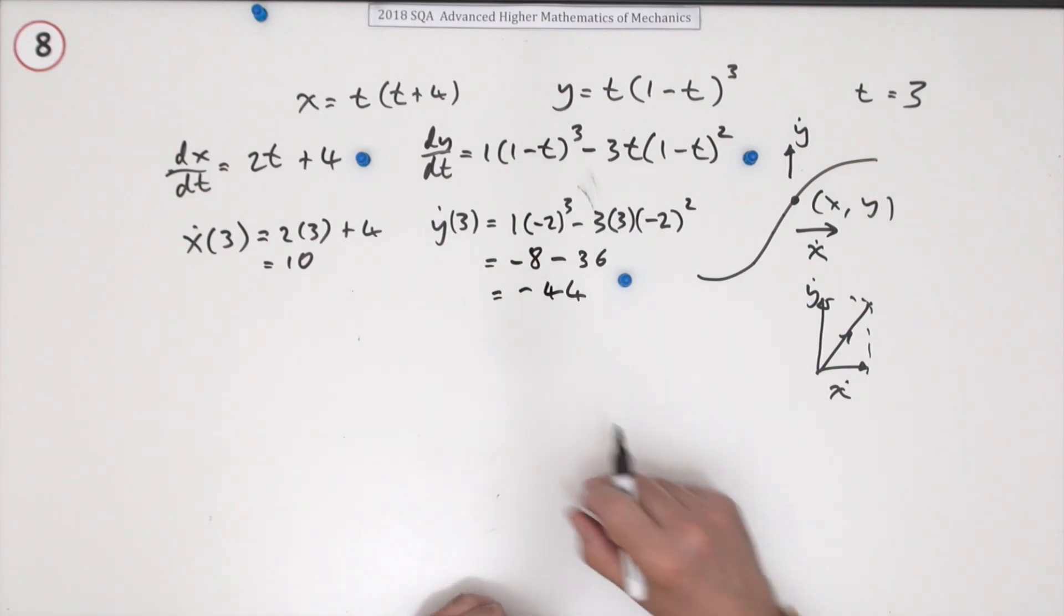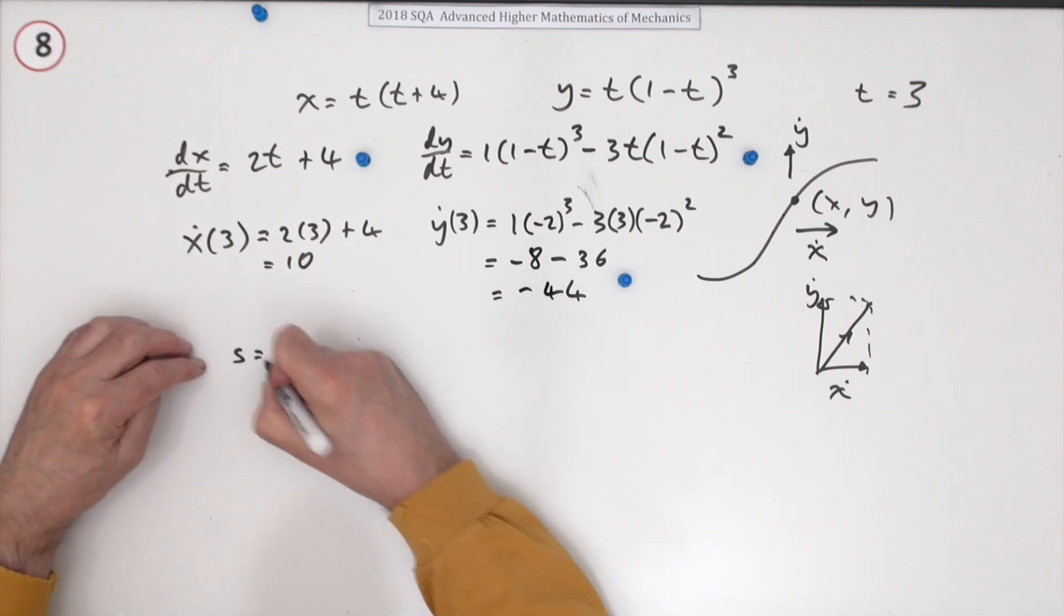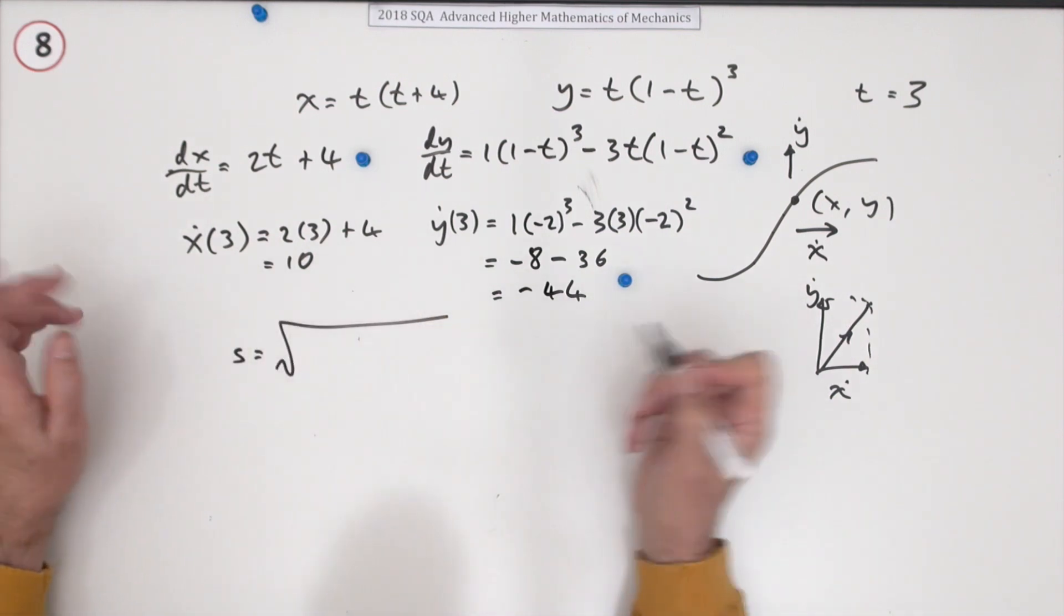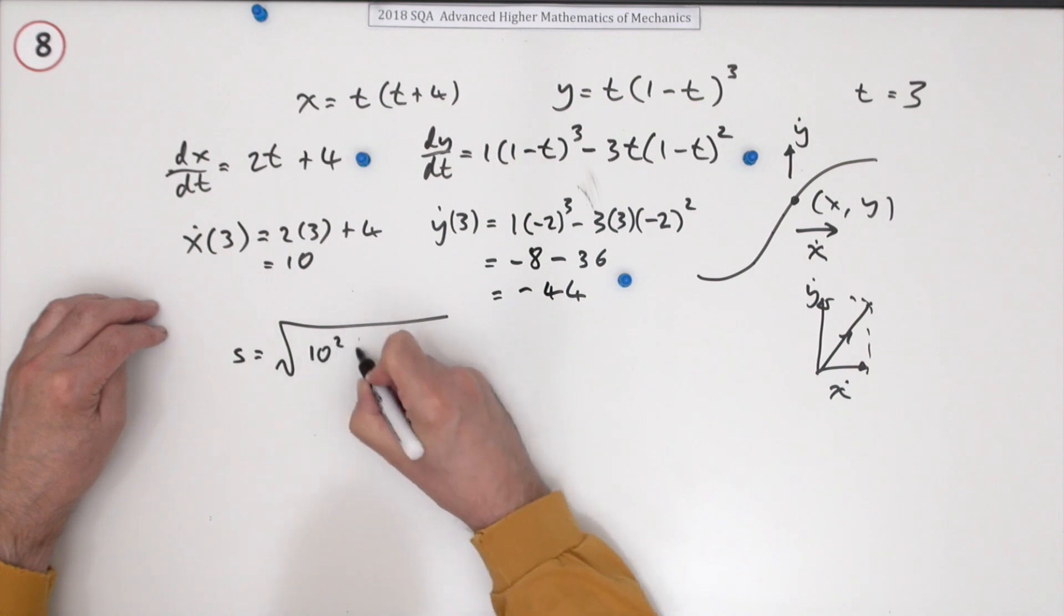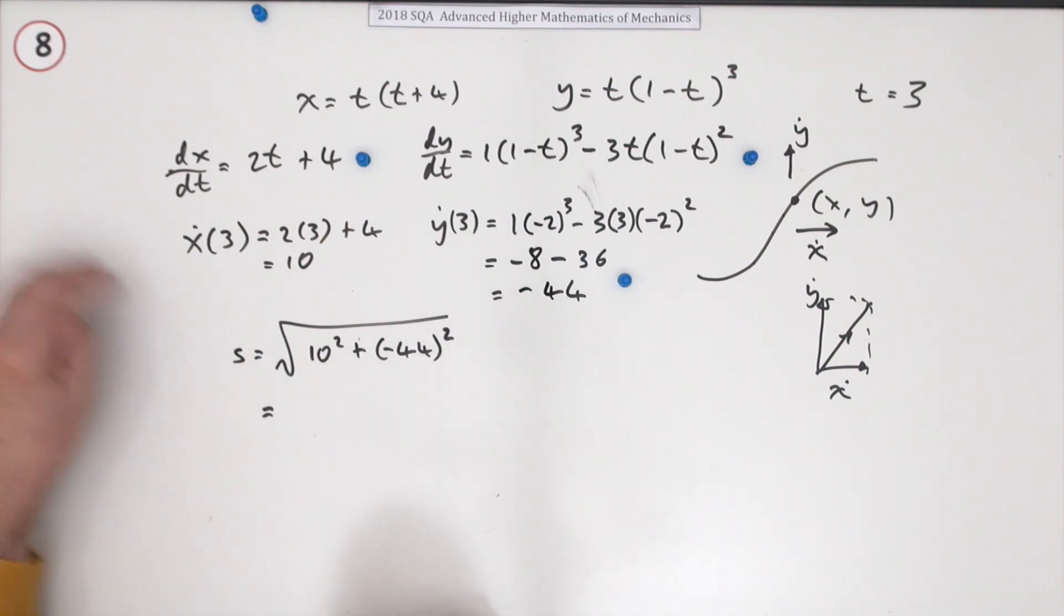Now the final mark's just for combining them to find the final speed. So the speed will be the square root, then it's just Pythagoras, of the 10 squared and I'll put in the negative 44, but of course that's the same as 44, negative 44 squared.